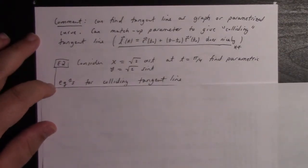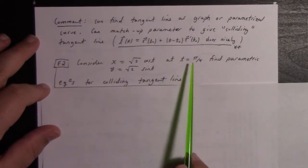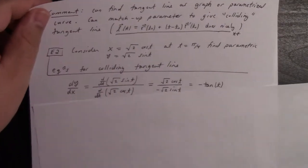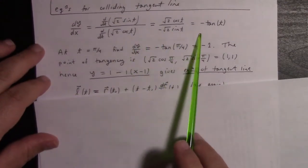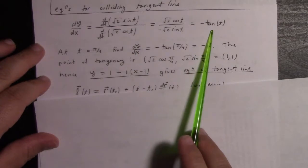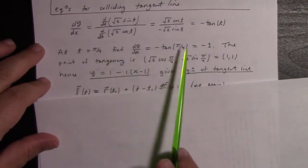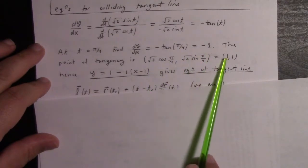Here's an example. Let's look at (√2 cos(t), √2 sin(t)) at time π/4 and find the parametric equations for the colliding tangent line. So I calculate dy/dx as -tan(t), but at π/4 we get slope -1. The point of tangency at π/4 is (1,1).